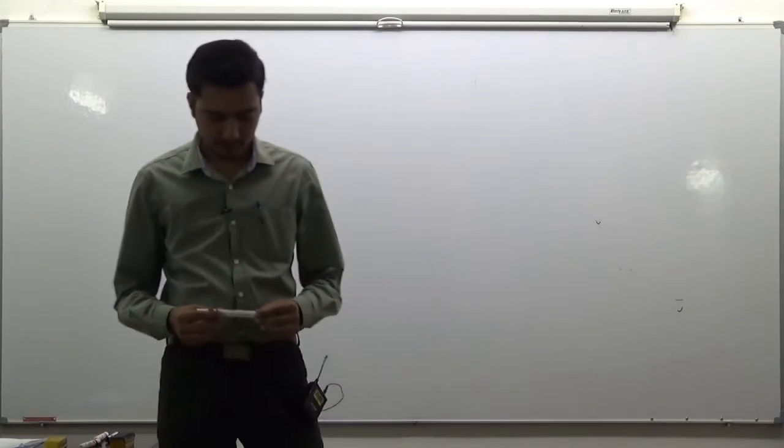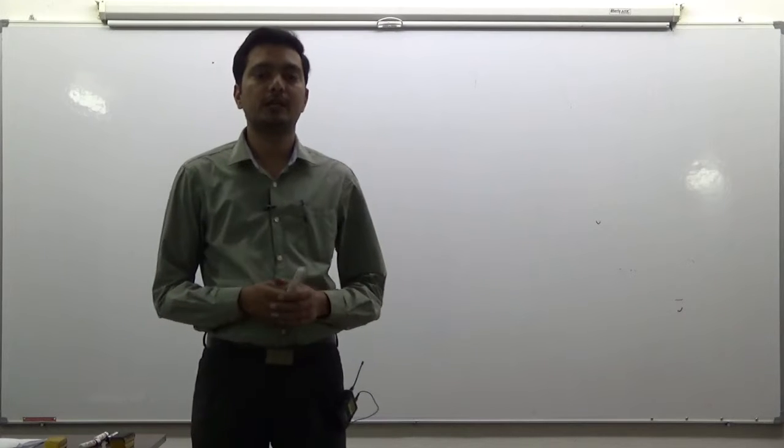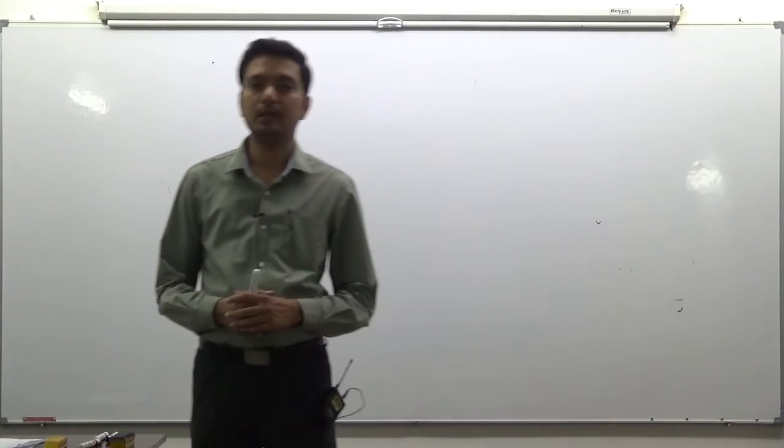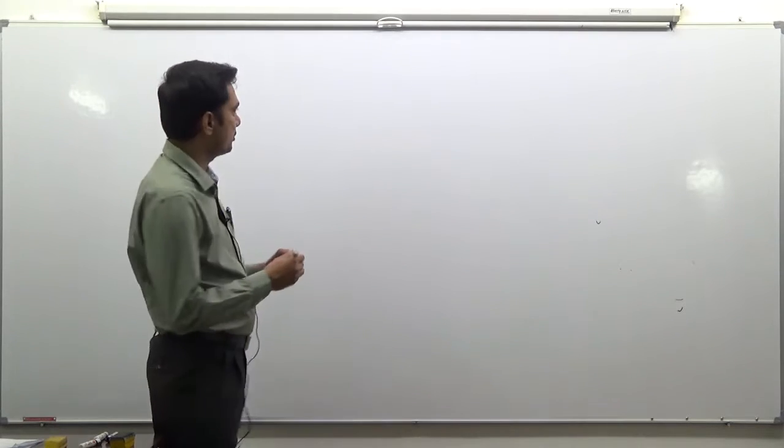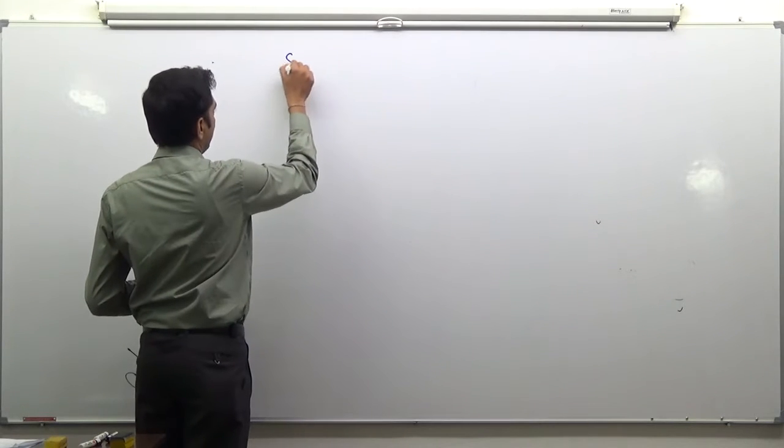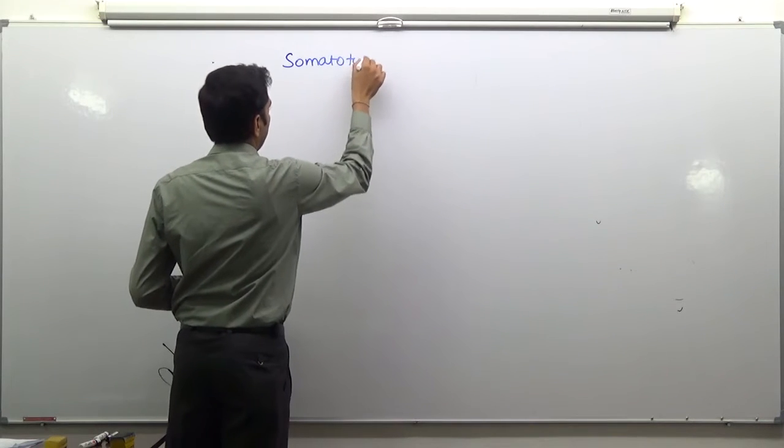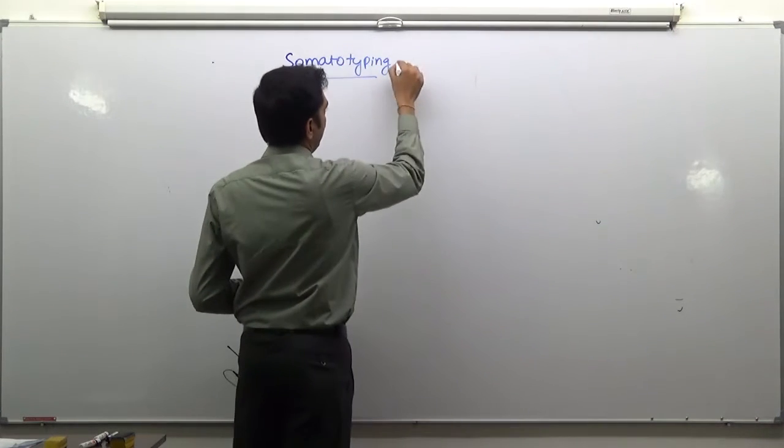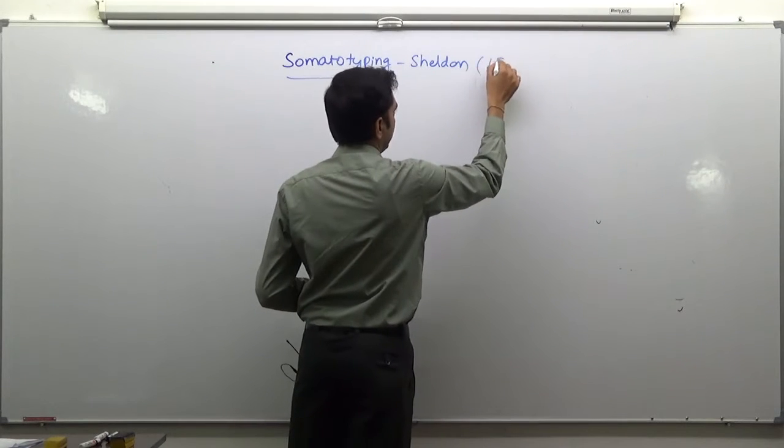Hello students, today we are going to discuss a recent question asked in 2017 Anthropology Mains. This question is in section B, question number 8, and it deals with the somatotyping method given by Sheldon. This is a 15 marker.